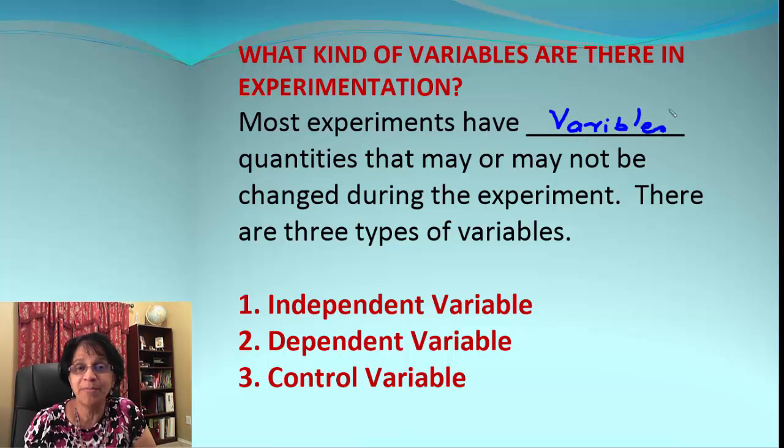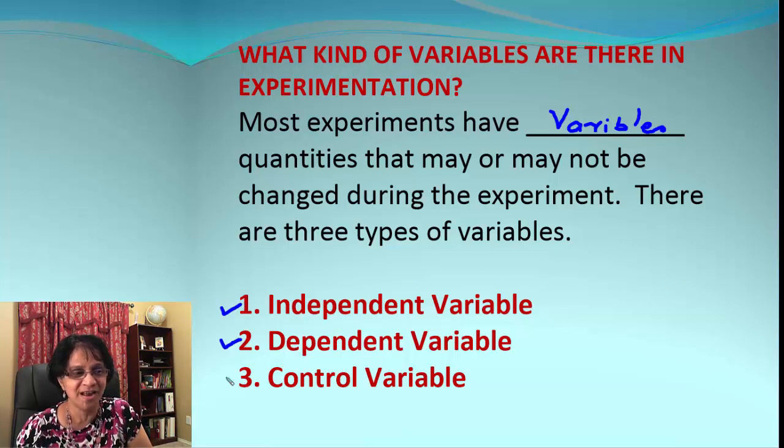What are the different types of variables? There's independent variable, dependent variable, and the third is control variable. Let's find out one by one what is the meaning of each of these variables.